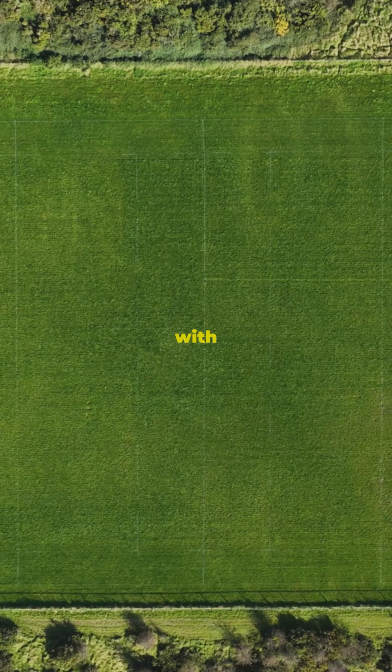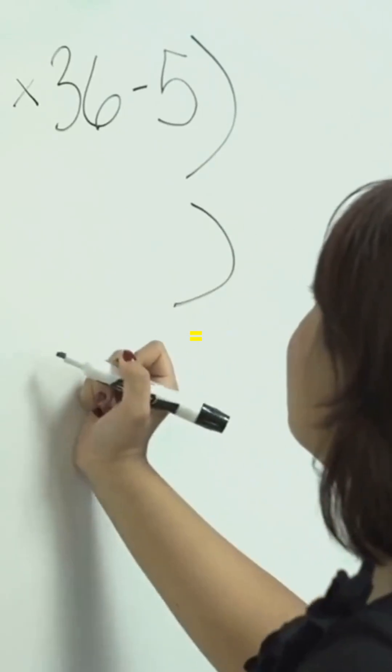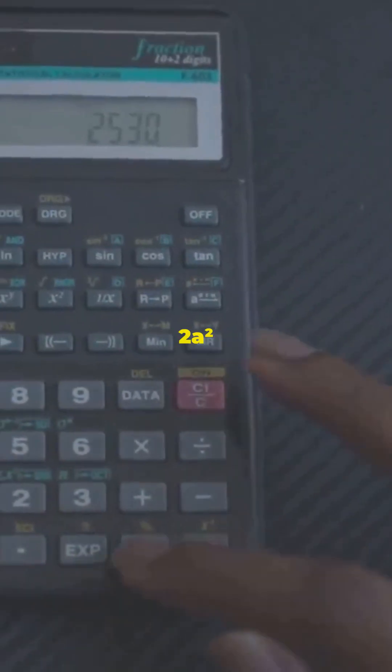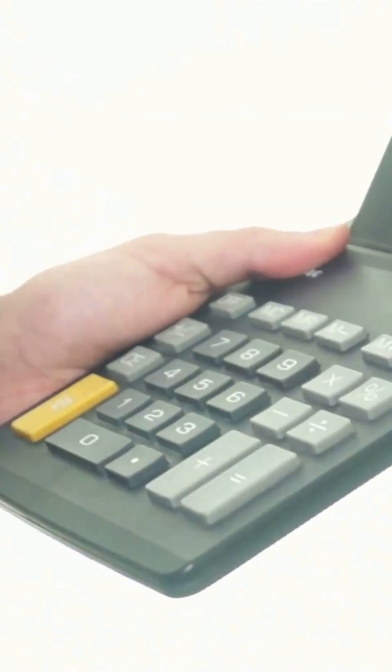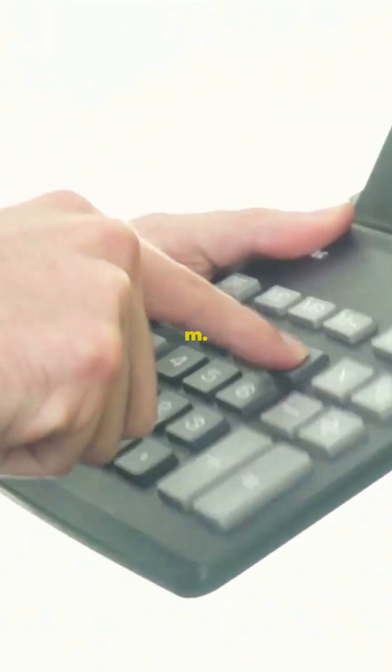Example 3: Got a square field with a diagonal of 20m? What's the length of each side? A² + A² = 20². That's 2A² = 400. So A² = 200 and A = √200, 14.14m.